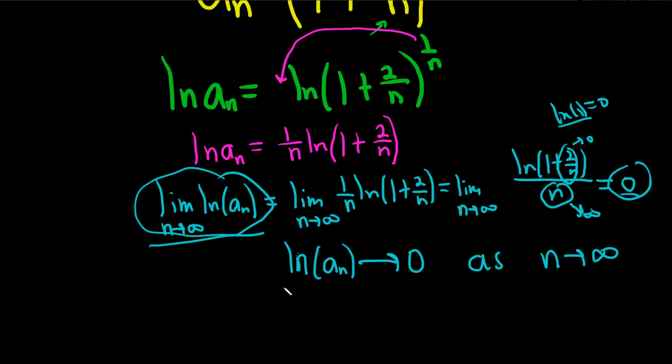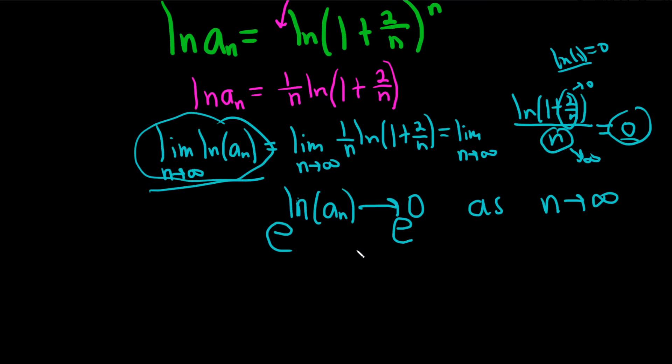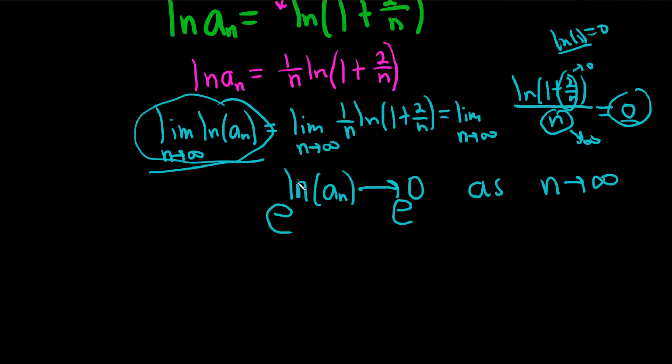That's what we've done, right? Because we took this limit and we got 0. So if you exponentiate, and you can do this, by the way, because e to the x is a continuous function. No one ever talks about it, but that's why this works. That's why we can do this. What happens here? We get a sub n approaching 1. Well, what is a sub n? a sub n was our original sequence. a sub n was 1 plus 2 over n to the 1 over n.